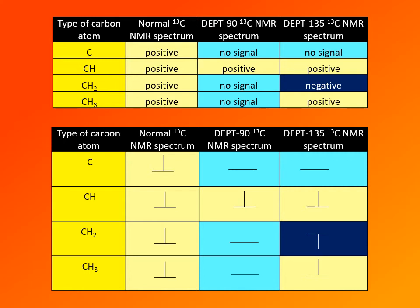DEPT-90 and DEPT-135 refer to special techniques where an additional RF pulse is applied. In DEPT-90, that RF pulse flips the magnetization vector of carbon-13 by 90 degrees; in DEPT-135, it flips it by 135 degrees. These techniques result in spectra where signals have a special appearance. Quaternary carbons — those without any hydrogens attached — appear only in the normal carbon-13 spectrum and give no signals in DEPT-90 or DEPT-135.